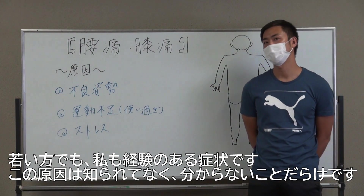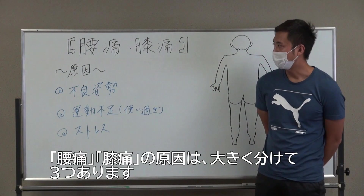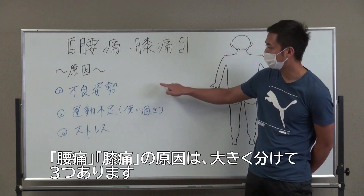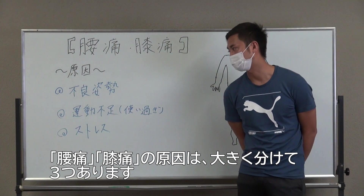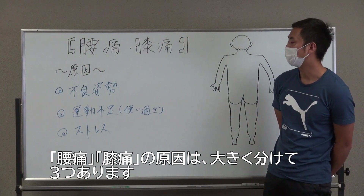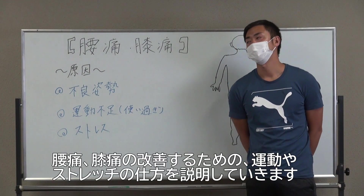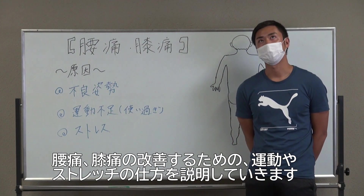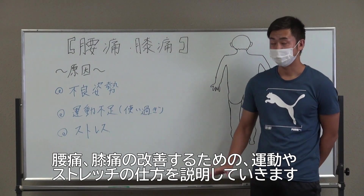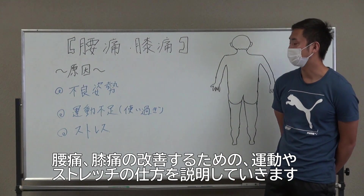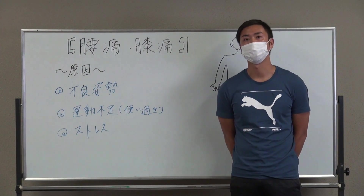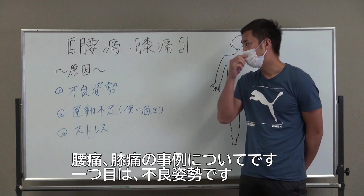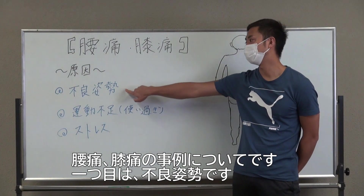腰痛・膝痛は高齢の方も含め若い世代でも経験がある症状になるんですけれども、これの原因って結構意外と知られてないし、未だにわからないことだらけになります。今日はホワイトボードに書いてあるんですけれども、原因が大きく分けて3つかなというところからお話をさせていただいて、腰痛・膝痛を改善するためにどういった運動やストレッチをしたらいいのかも説明していこうと思います。